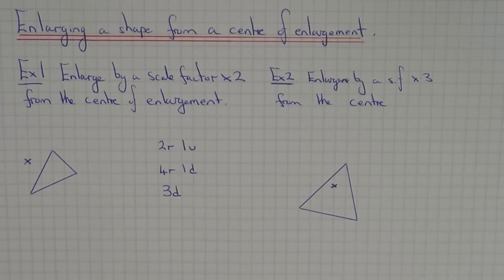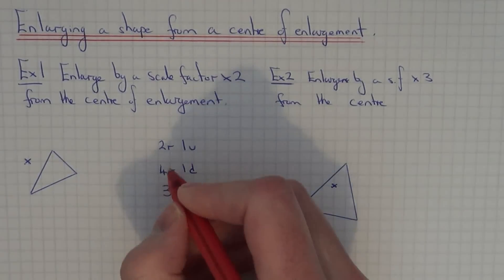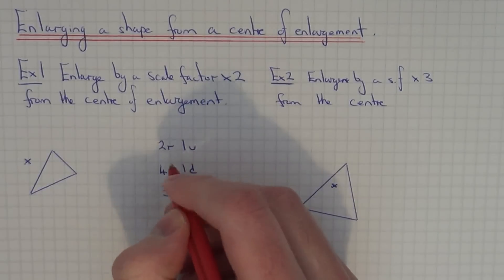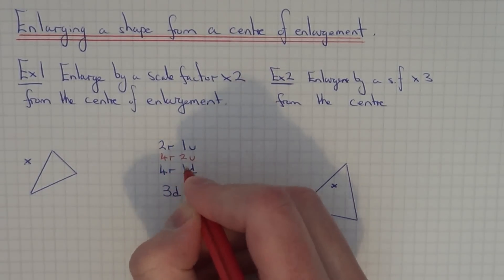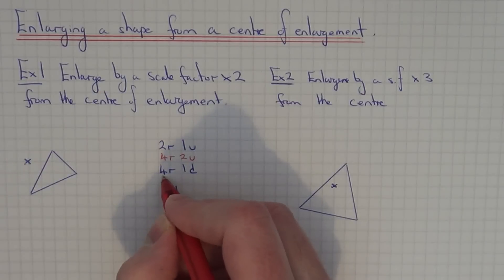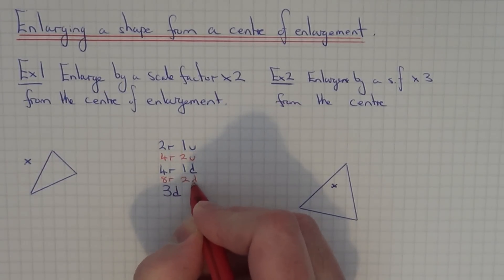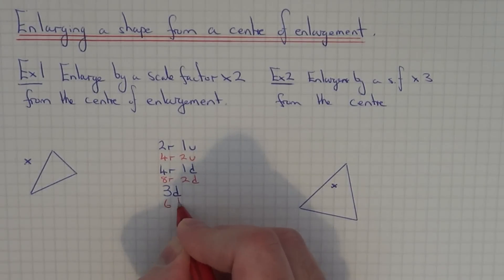Since it's a scale factor times two, we need to double these distances. So if we double two right, one up, we get four right, two up. If we double four right, one down, we get eight right and two down. And if we double three down, we get six down.